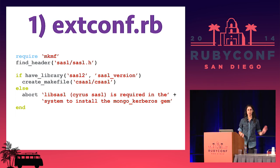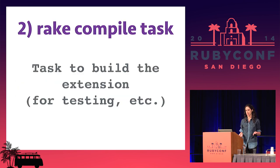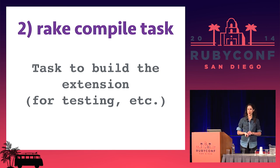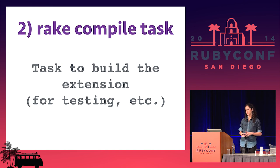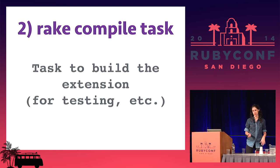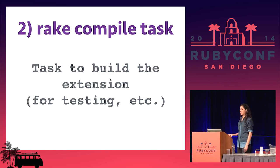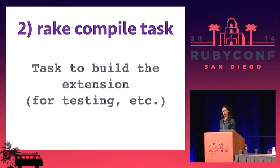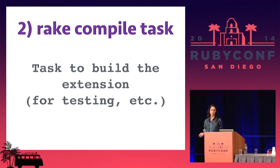The second thing — not completely essential but necessary if you're ever going to test your extension — is to write a Rake compile task. You'll probably use rake-compiler, the go-to gem for this. You write a task that will build and install the extension so that you can use it in a testing environment. You can find good documentation on rake-compiler online.